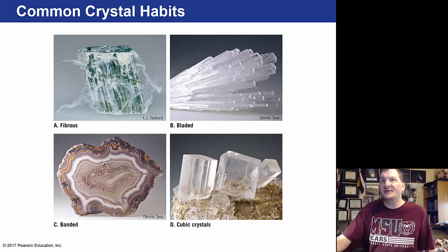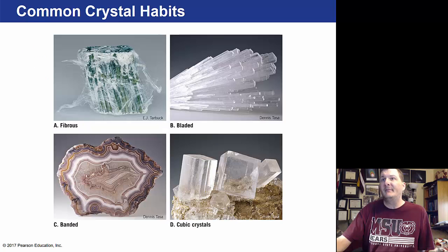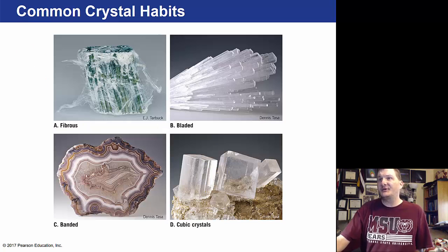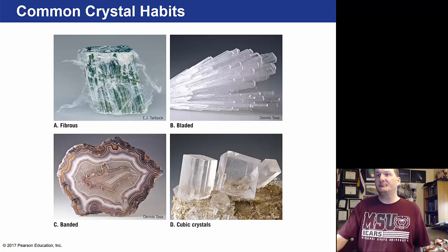Some different crystal habits include fibrous — with fibers extending outward; bladed — which looks like fiber-optic glass; banded — sold in science stores; and cubic crystals, which we see in salt.